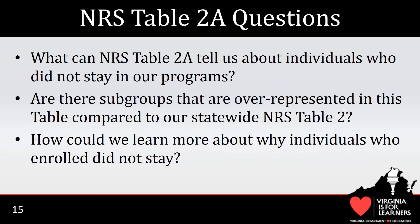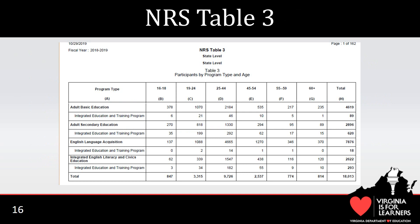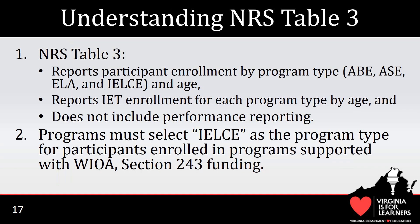Here are some questions about NRS Table 2A for you to consider about your region's reportable individual population. Here is the state NRS Table 3, which gives a breakdown of Virginia's adult education participant population by program type according to age. Because IELCE is now included as a WIOA program, an IELCE program type has been added to the list of program types. Also, because IET is identified as a priority in WIOA, states are required to report the IET enrollment for each program type as a subtotal of that program type. Similar to the other tables, NRS Table 3 does not include performance reporting, and age is based on the participant's age at the time of program entry.